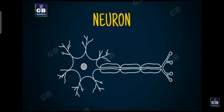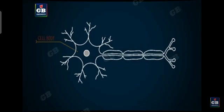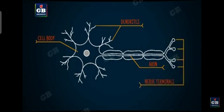Here we have a diagram of neuron. Let us identify the different parts of the neuron by labeling them. This is cell body, these are dendrites and this is the axon and these are the nerve terminals or nerve endings.